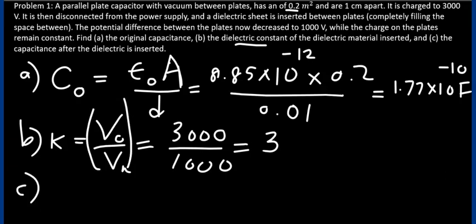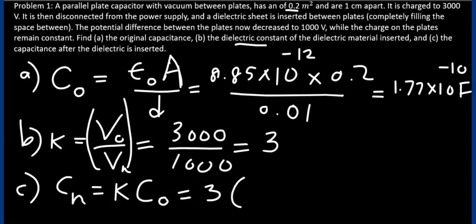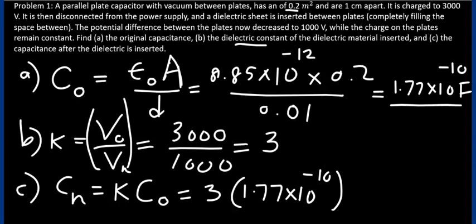Part C: the capacitance after the dielectric is inserted. The new capacitance is quite simply the dielectric constant times the capacitance of the capacitor with vacuum in between. The dielectric constant is 3. The capacitance of the capacitor with vacuum in between the plates, from Part A, is 1.77 × 10⁻¹⁰ farads.